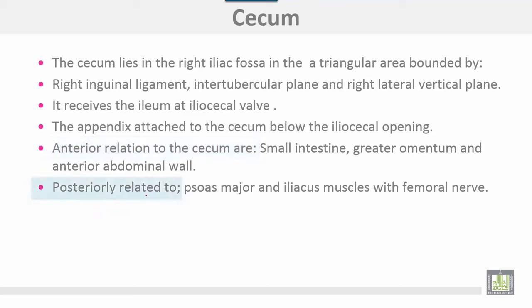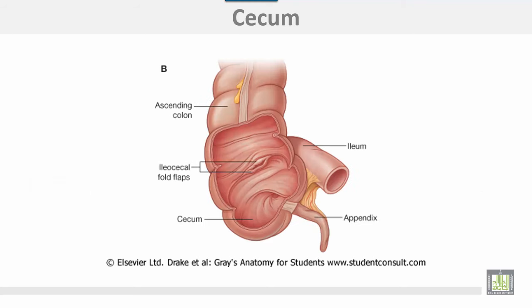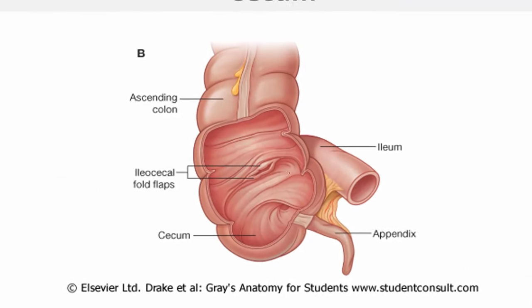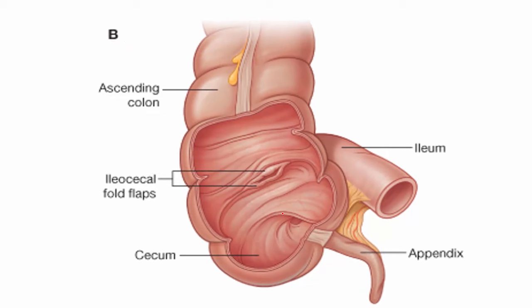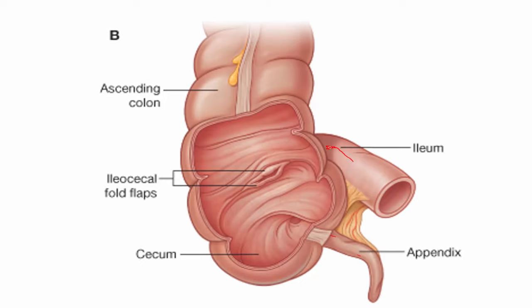Posteriorly, the cecum is related to the psoas major and iliacus muscle with the femoral nerve. This is the cecum shown from the inside. These are the flaps of the ileocecal valve, and this is the appendix. This is the end of the small intestine at the ileocecal junction.